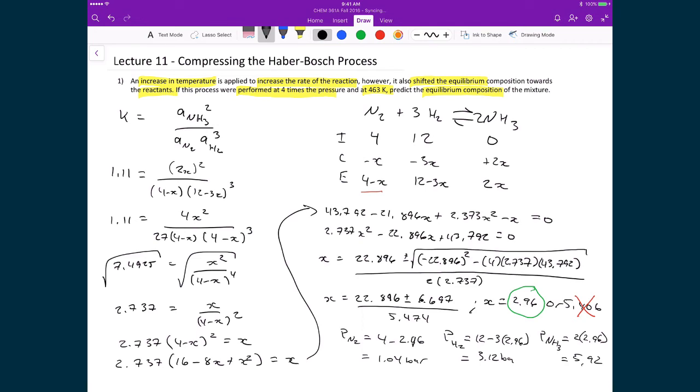And if we do this quick analysis again where we find out what is the mole fraction of ammonia in this equilibrium mixture, we find that it's now equal to 0.59. And so this value is certainly better than the value that we had before when we didn't apply higher pressures.